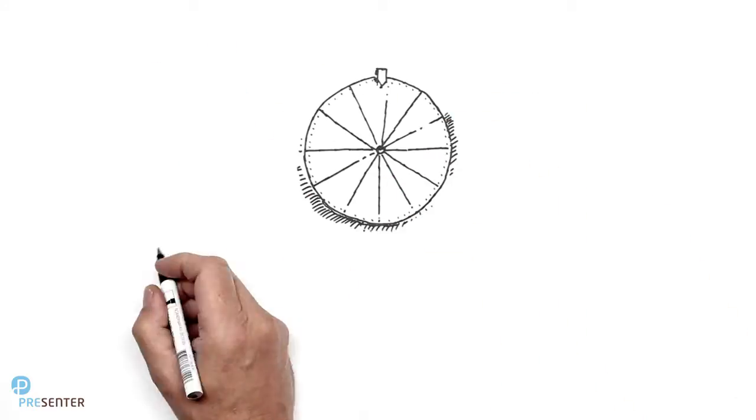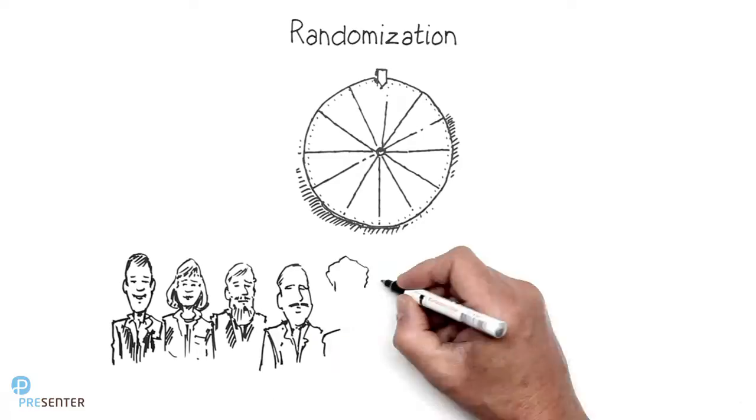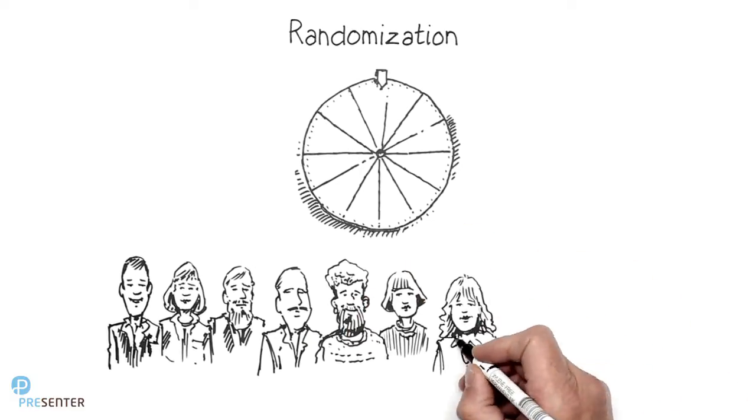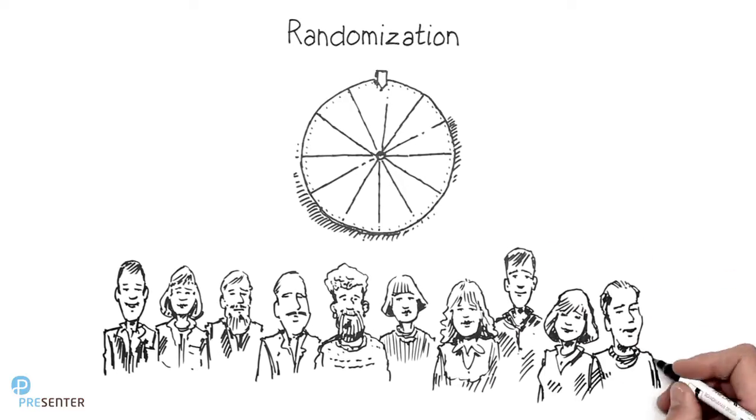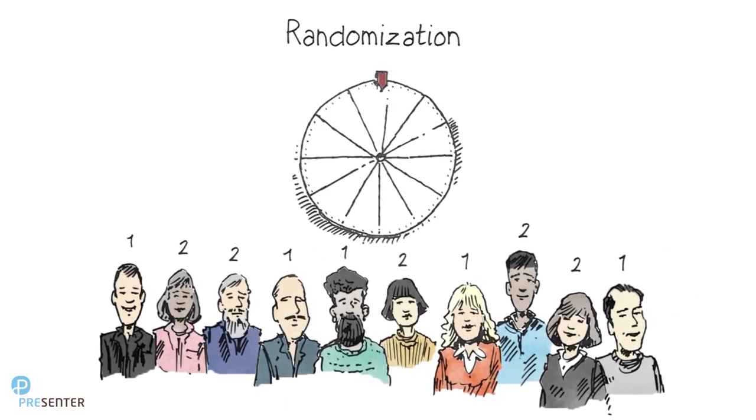In an RCT, randomization means that the interventions being evaluated are randomly distributed across the participants in the trial. The randomization process can, for example, be conducted by use of a database that generates numbers to indicate who will receive which intervention.